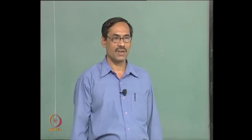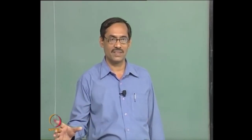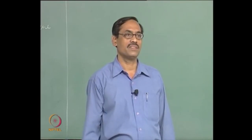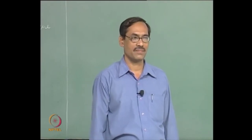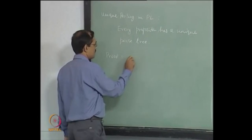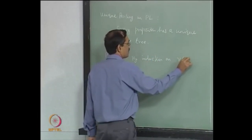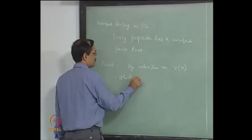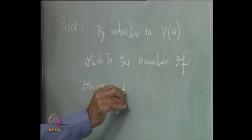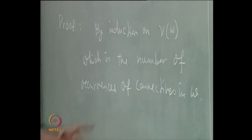The structure here means the number of occurrences of connectives, because at each stage you might be introducing another connective, taking clue from the earlier generated propositions. So let us have induction on the number of occurrences of connectives in a given proposition. We suggest proving it by induction on ν(W), which is the number of occurrences of connectives in W, where W is any arbitrary proposition.